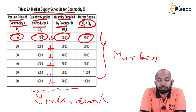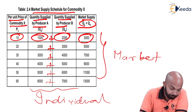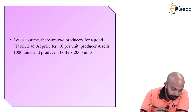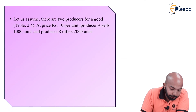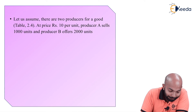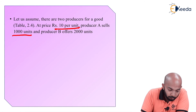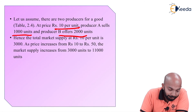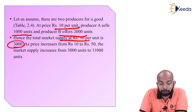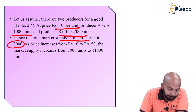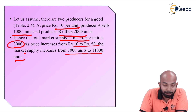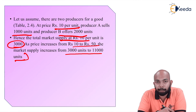In the market supply schedule for commodity X, the price per unit is shown alongside quantity supplied by producer A, quantity supplied by producer B, and the market supply, which equals quantity A plus quantity B. At 10 rupees, A supplies 1000 and B supplies 2000, giving a total market supply of 3000. As price increases from 10 to 50, the market supply increases from 3000 units to 11,000 units.